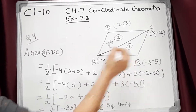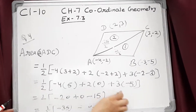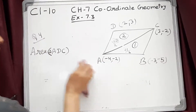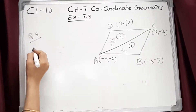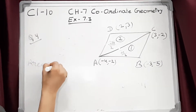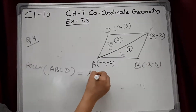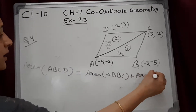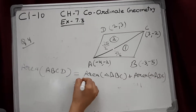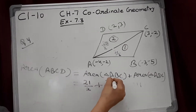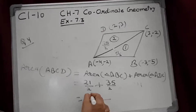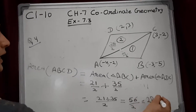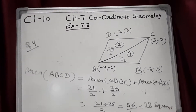This area is 35/2 square units and the first triangle area is 21/2 square units. After that, add these two areas to find the area of quadrilateral ABCD. Area of ABCD equals area of triangle ABC plus area of triangle ACD, which is 21/2 plus 35/2 equals 56/2 equals 28 square units. This is our answer for question number 4.